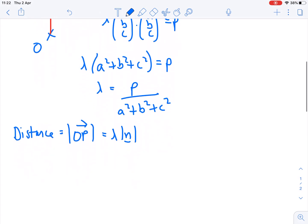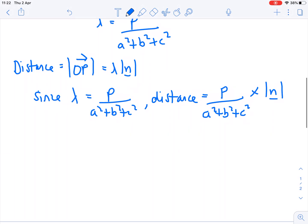I now know what lambda is in terms of everything else to do with the plane. So since lambda is P over A squared plus B squared plus C squared, my distance, if I substitute that in, I can write as P over A squared plus B squared plus C squared, multiplied by the magnitude of N. You might be able to see where this is going.